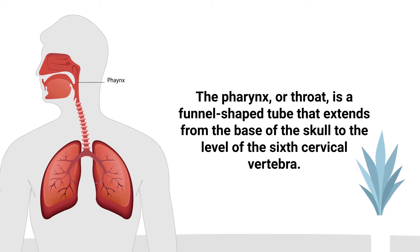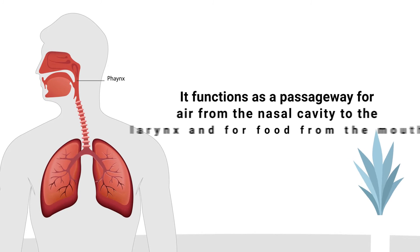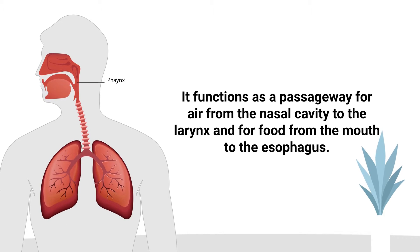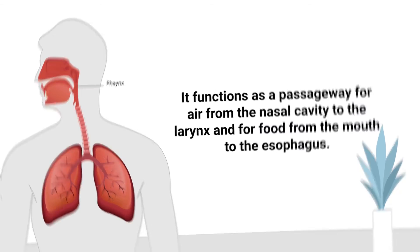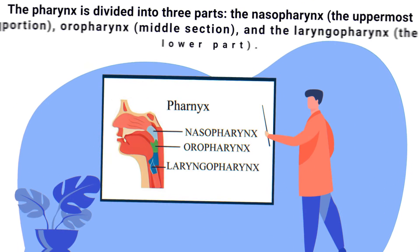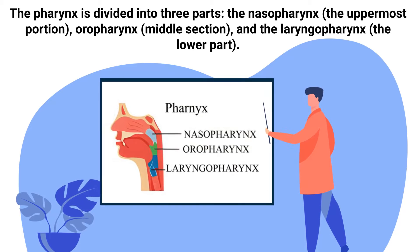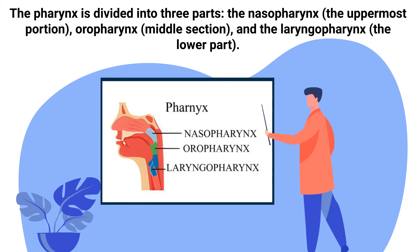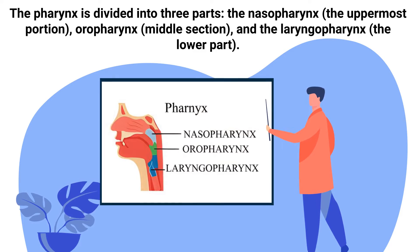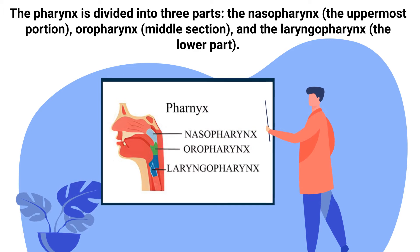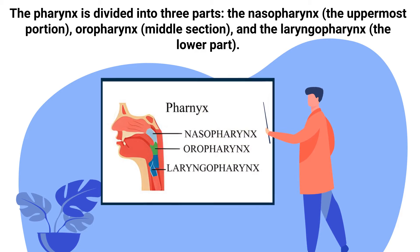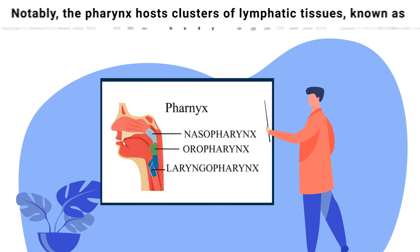The pharynx functions as a passageway for air from the nasal cavity to the larynx, and for food from the mouth to the esophagus. It is divided into three parts: the nasopharynx, which is the uppermost portion; the oropharynx, which is the middle section; and the laryngopharynx, which is the lower part.